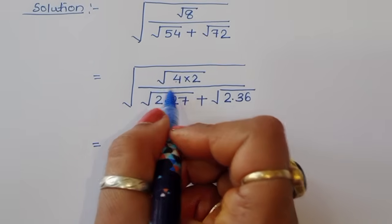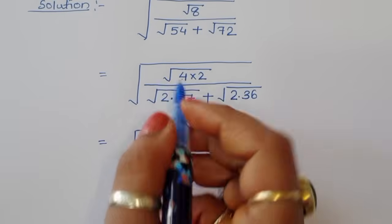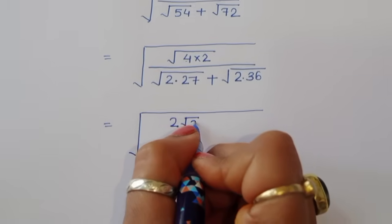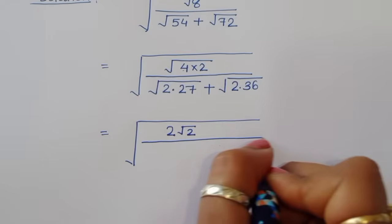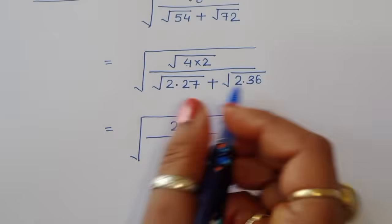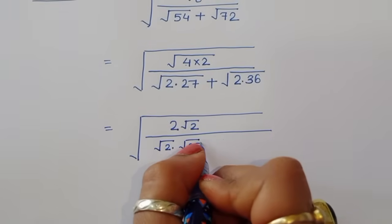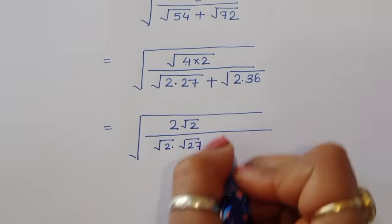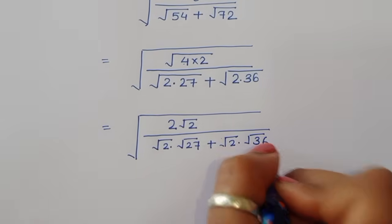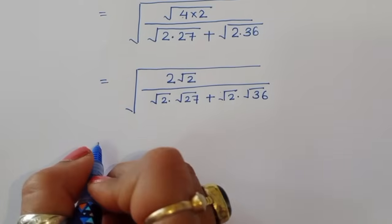Now square root of 4 equals 2, so in the numerator we have 2 times square root of 2. In the denominator, we separate the terms: square root of 2 times square root of 27 plus square root of 2 times square root of 36.